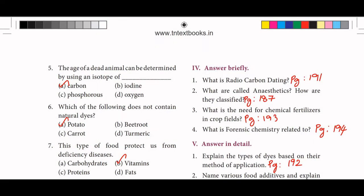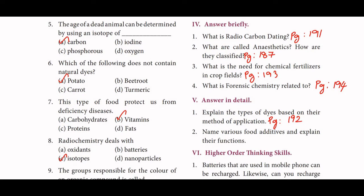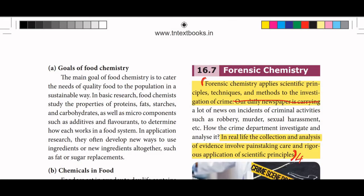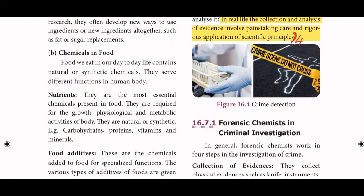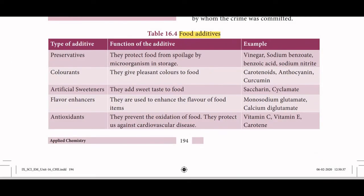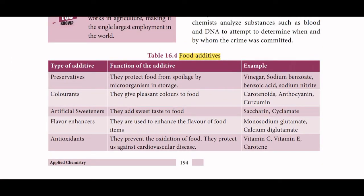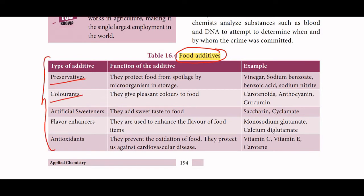Next question: name various food additives and explain their functions. The food additives are: emulsifiers, preservatives, colorants, artificial sweeteners, flavor enhancers, and antioxidants — with their respective functions covered in the answer.